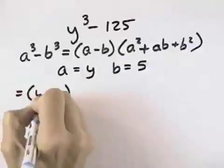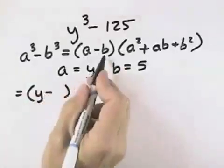So that wherever there's an a, I'll put a y. Wherever there's a b, I put a 5, so I have y minus 5.